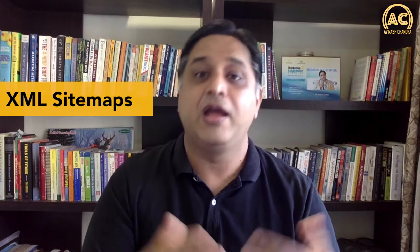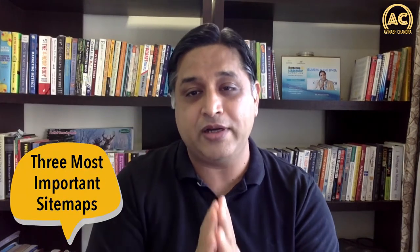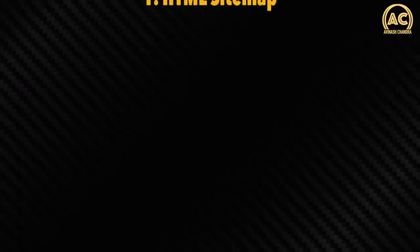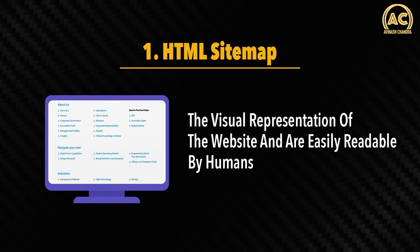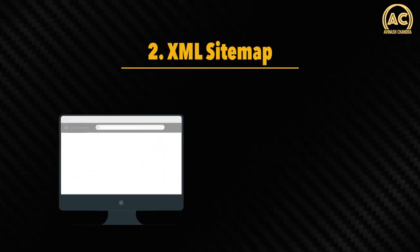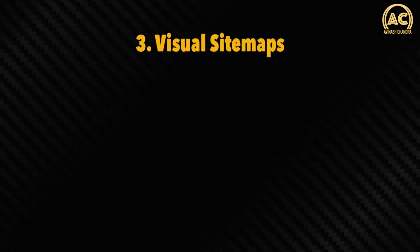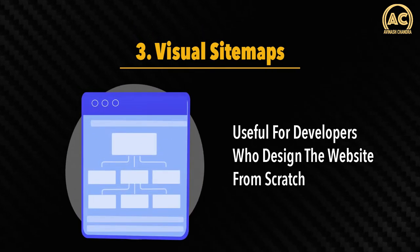Let us understand the different types of sitemaps. You can create different sitemaps for different purposes, such as XML sitemap, HTML sitemap, video sitemap, image sitemaps, and many more. The three most important ones are: HTML sitemap, which contains a visual representation of the website and is easily readable by humans; XML sitemap, which is machine-friendly and helps crawlers identify important web pages; and visual sitemaps, which are useful for developers who design a website from scratch. All three have different applications and you should be aware of them before you start to make one.